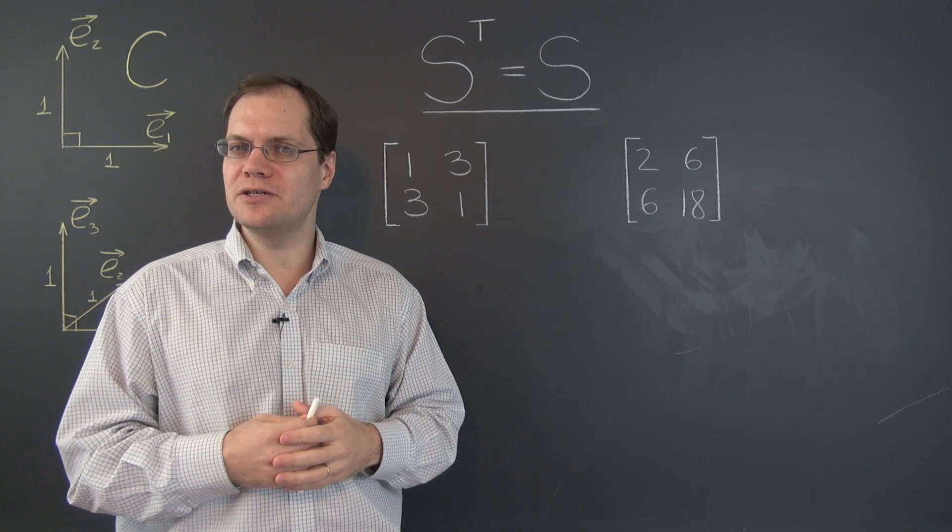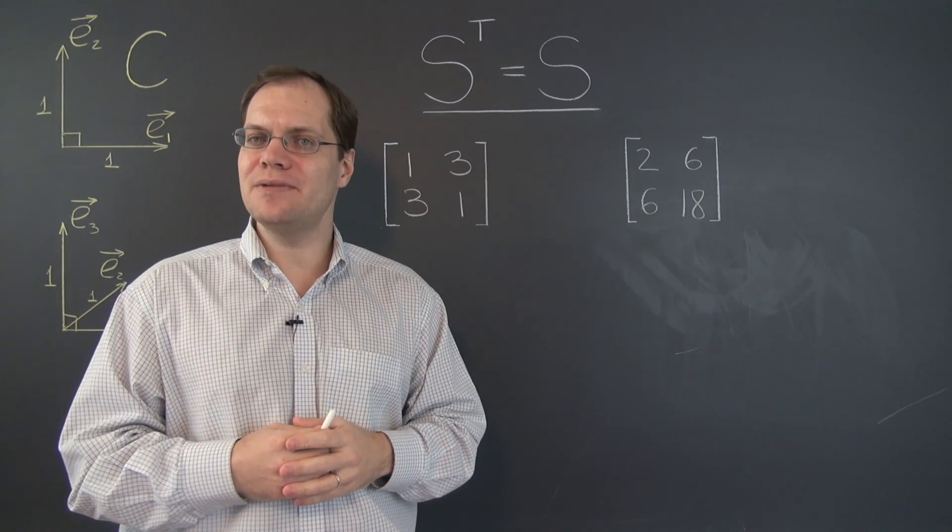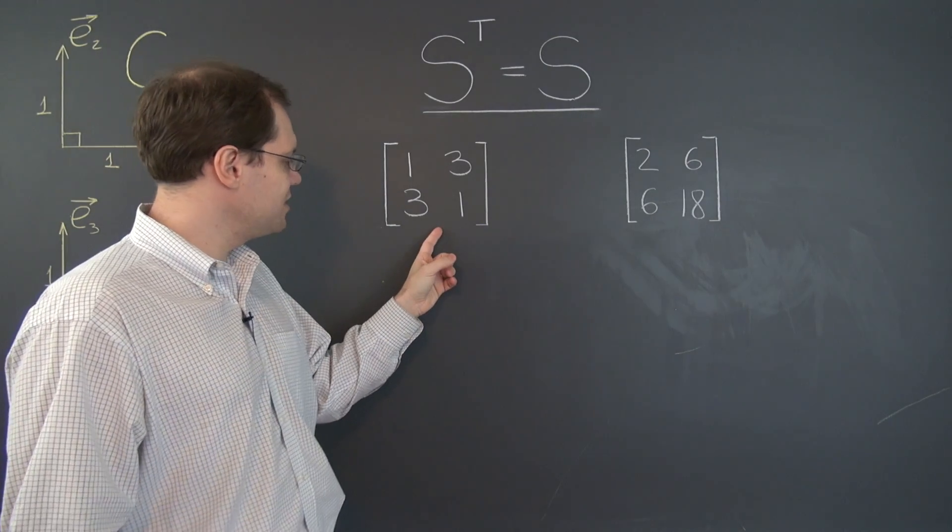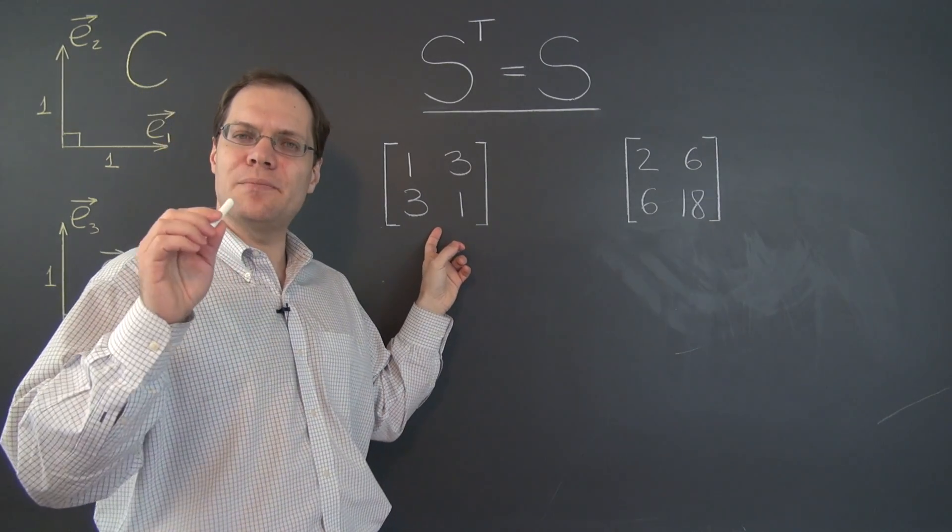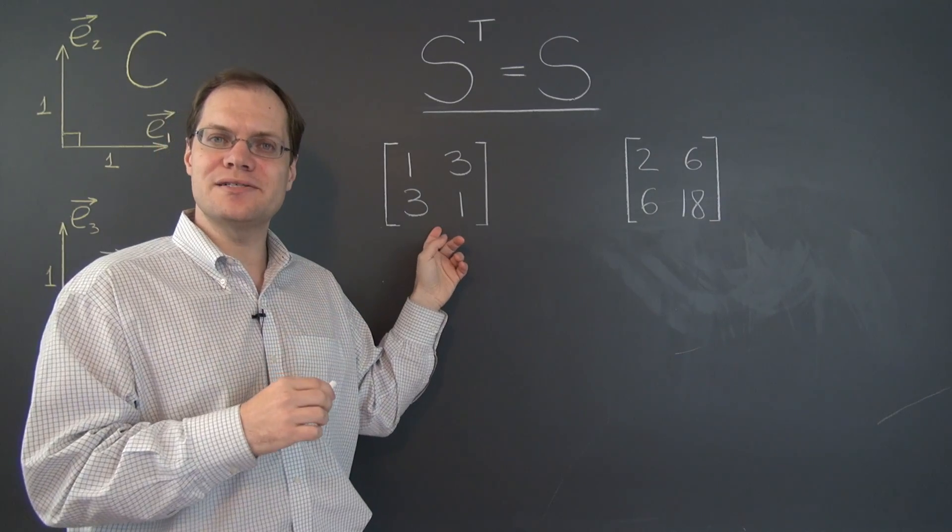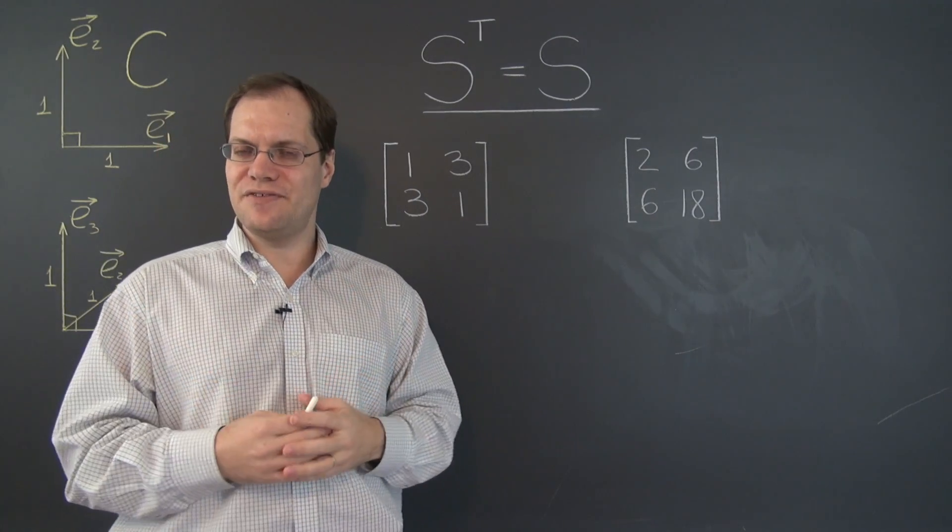For example, if every row of a matrix adds up to the same number as the case is with this matrix, then that number is an eigenvalue, and a column of all ones is the corresponding eigenvector.